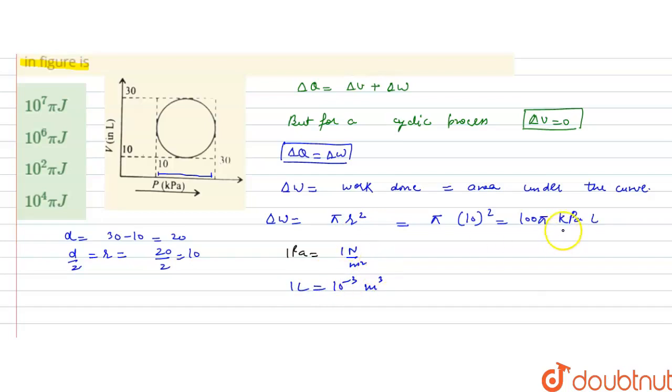So, if we put these values and kilopascal will be, 10 raised to the power. So, delta W will become, 100 pi. For kilo, we will multiply this by, 10 raised to the power 3.